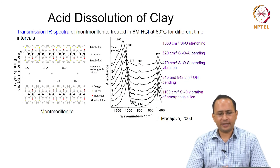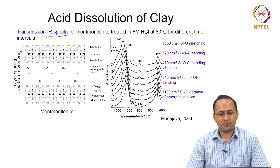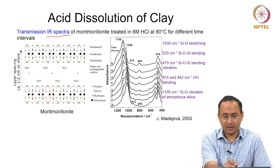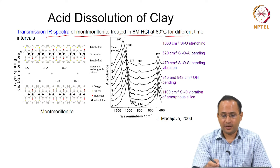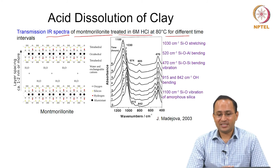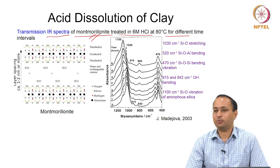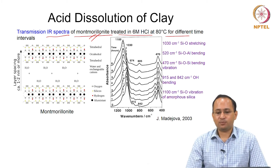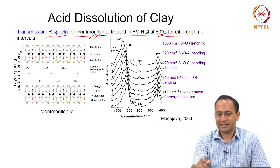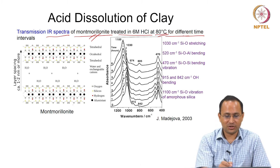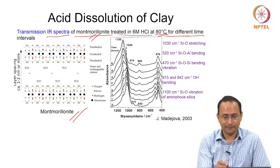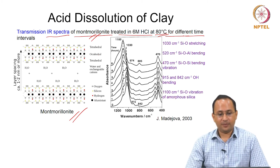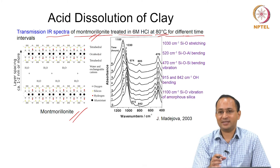One of the techniques covered in class will be infrared spectroscopy. Transmission IR spectra can be analyzed and used to monitor the changes in montmorillonite clay when it is exposed to 6 molar hydrochloric acid at 80 degrees Celsius for different time intervals. This spectroscopy can be used to understand the bonding environments.